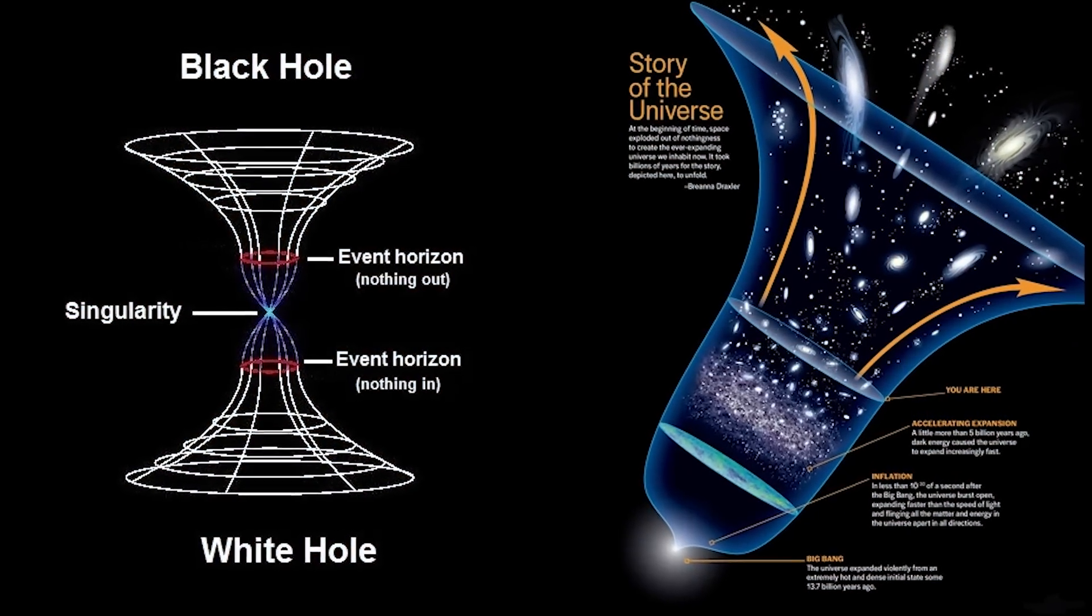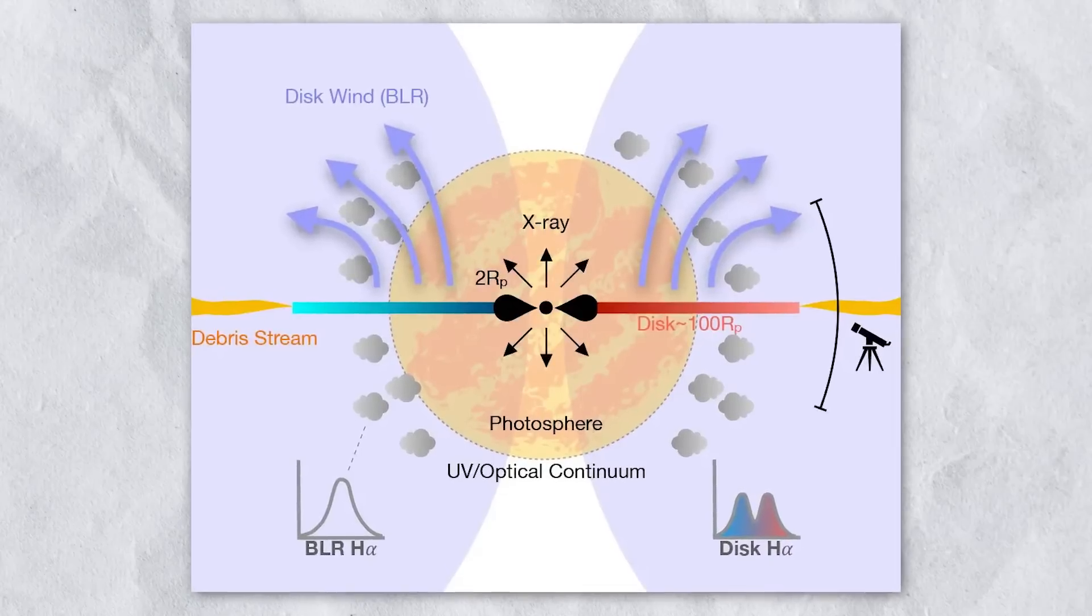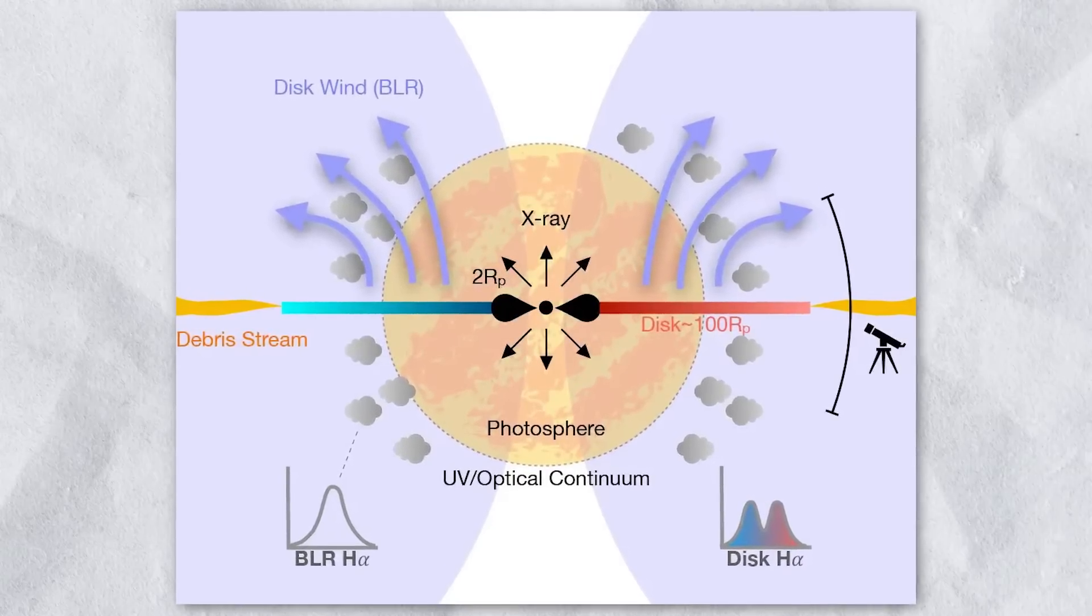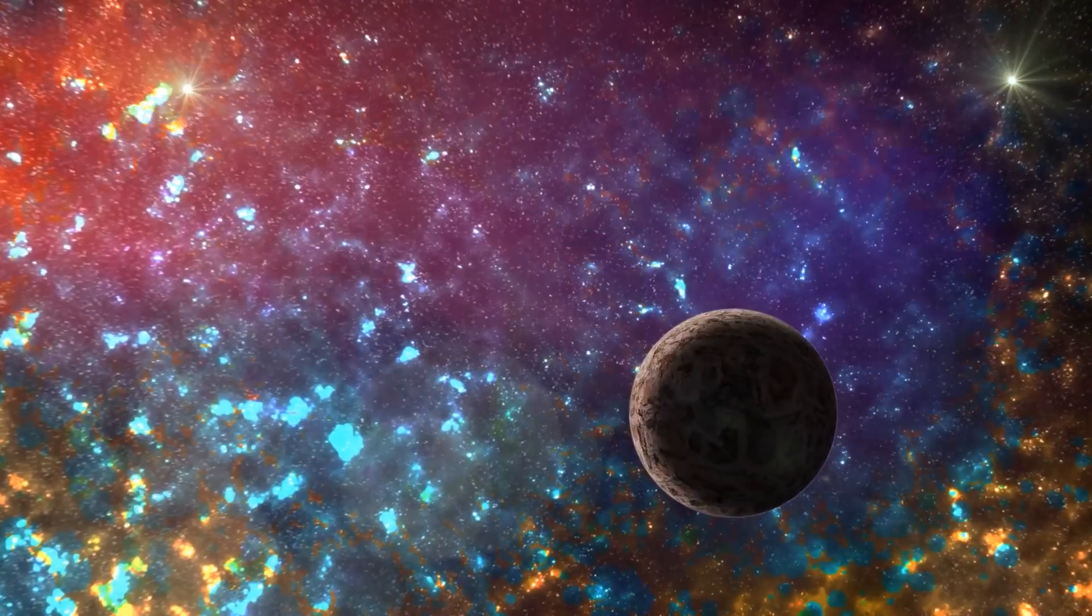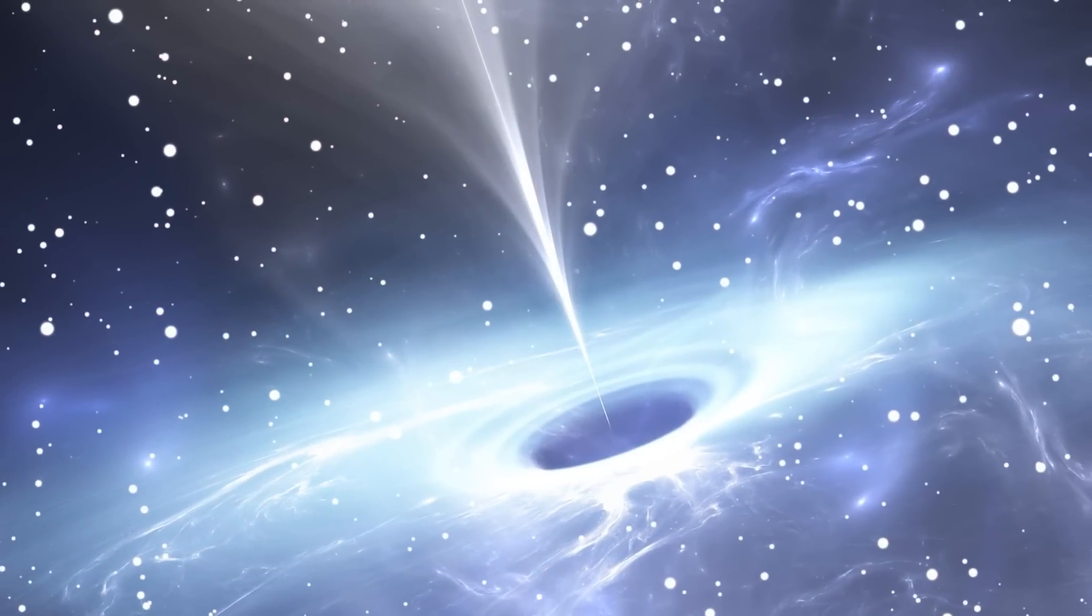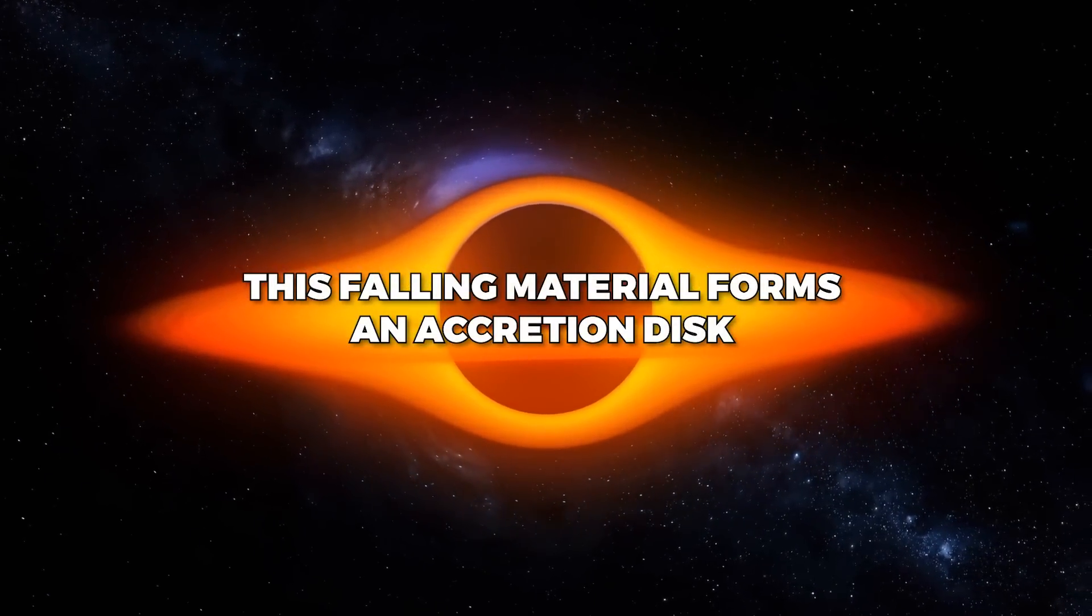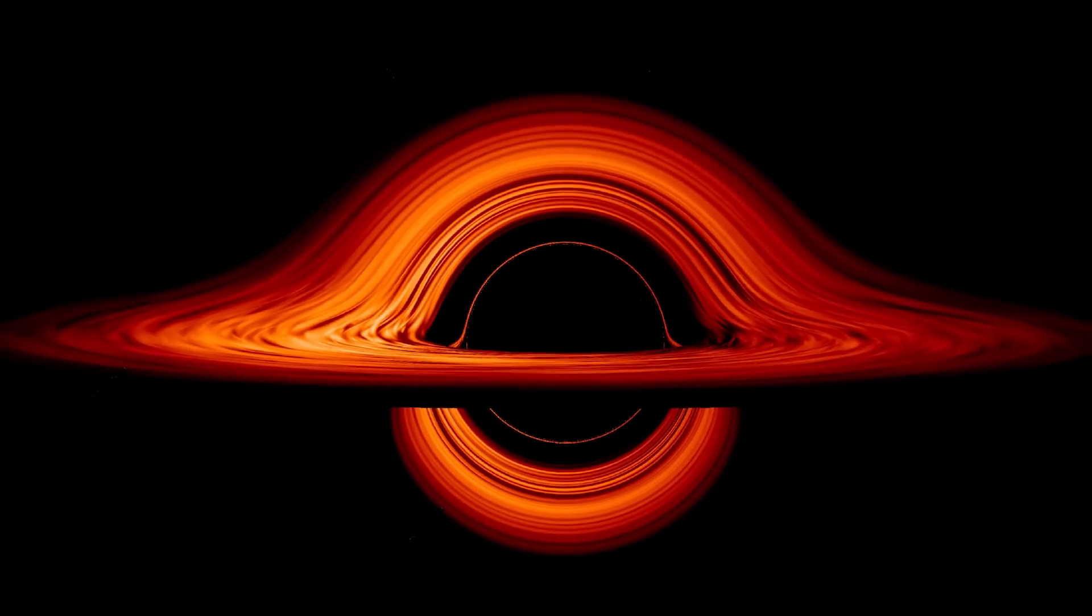One of the most interesting aspects of TDEs is that they provide a unique opportunity to study the immediate environment around a supermassive black hole. When a star is disrupted, some of its material is ejected from the system, while the rest falls into the black hole. This falling material forms an accretion disk, a swirling disk of gas and dust that orbits around the black hole.